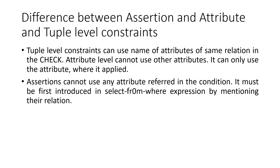The differences among constraint types are summarized in the final slides. Tuple-level constraints can use attribute names of the same relation in the CHECK clause without specifying the relation name in a SELECT query. You cannot use attributes from different relations in tuple-based checks. Attribute-level checks can only reference the specific attribute on which the check is applied. Assertions, on the other hand, cannot use attribute names without specifying the relation in the FROM clause of the query.